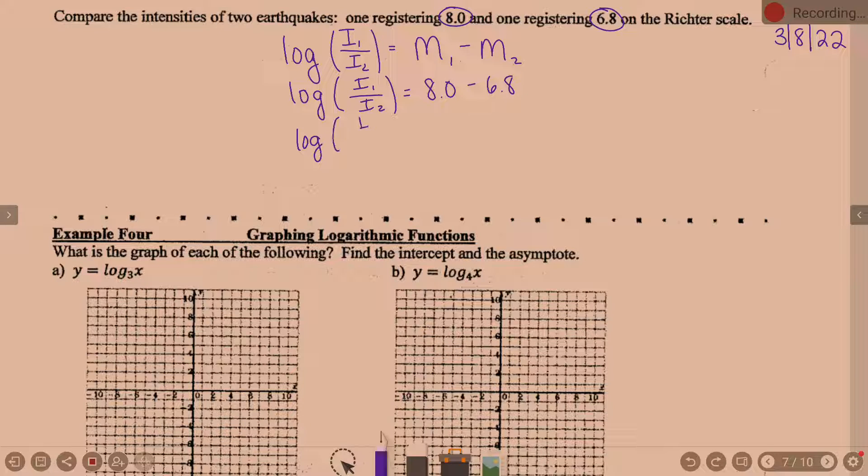So the log of I1 over I2 is equal to 1.2. When we're trying to compare the intensities, we want to know what is the ratio of I1 divided by I2, the first intensity divided by the second intensity.